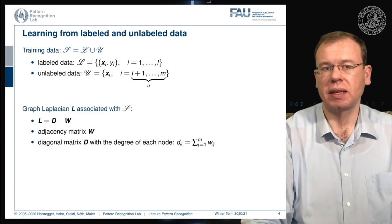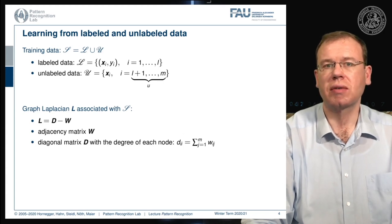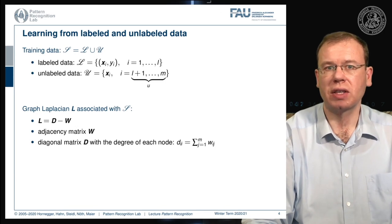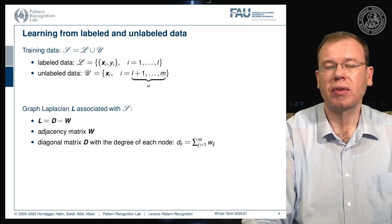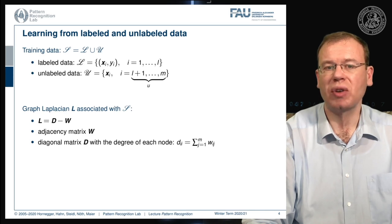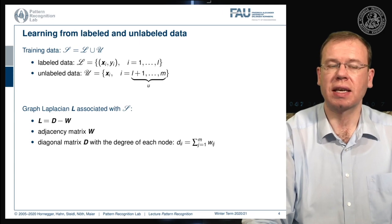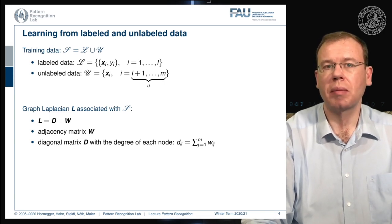The other concept we need is the graph Laplacian associated with our entire training data set. This is given as the matrix capital L, computed as D minus W, where W is the adjacency matrix — a matrix that tells us which elements are connected and how strongly. D is the diagonal degree matrix, where each diagonal entry is the sum over all weights incident to that particular node. The graph Laplacian is obtained by taking D and subtracting W, and this matrix becomes very important when deriving the Laplacian support vector machines.